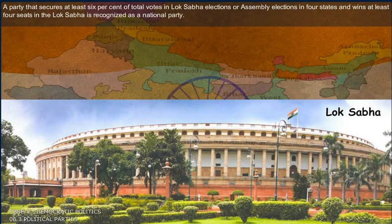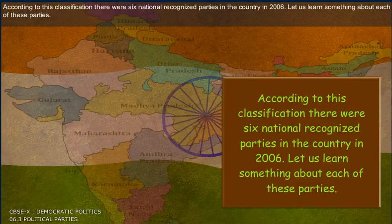A party that secures at least 6% of total votes in Lok Sabha elections or assembly elections in four states, and wins at least four seats in the Lok Sabha, is recognized as a national party. According to this classification, there were six nationally recognized parties in the country in 2006. Let us learn something about each of these parties.